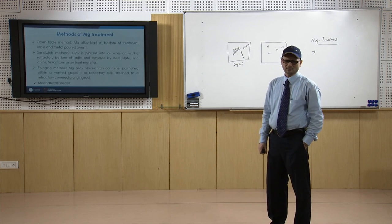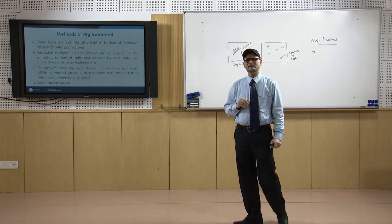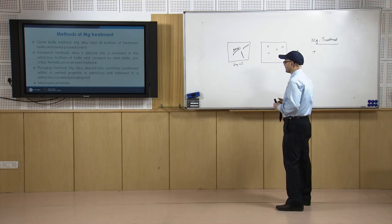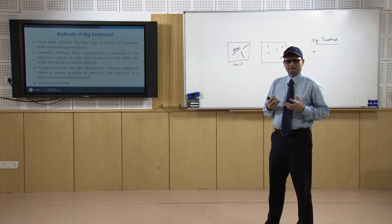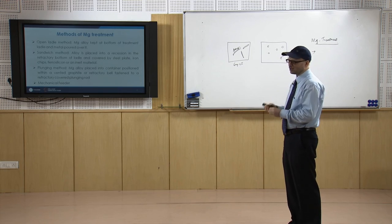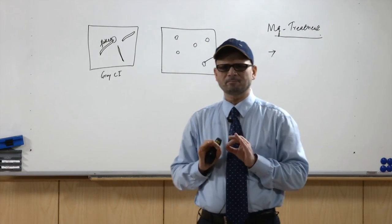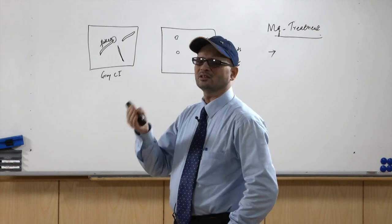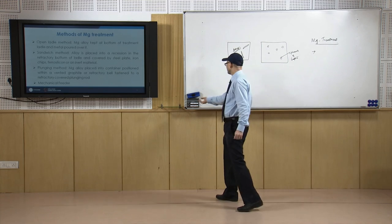There are different methods of magnesium treatment. In the open ladle method, magnesium alloy is kept at the bottom of the treatment ladle and liquid metal is poured over it. Since magnesium oxidizes very quickly and the reaction is volatile, placing it at the bottom improves magnesium recovery. The magnesium reacts and slowly induces spheroid formation.